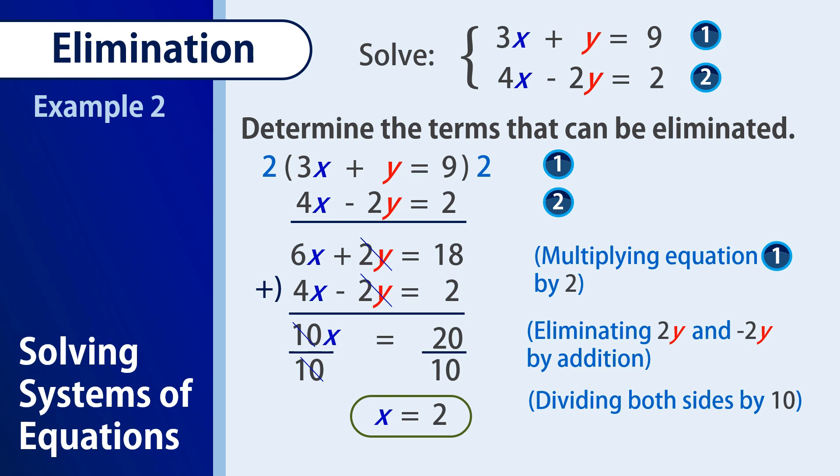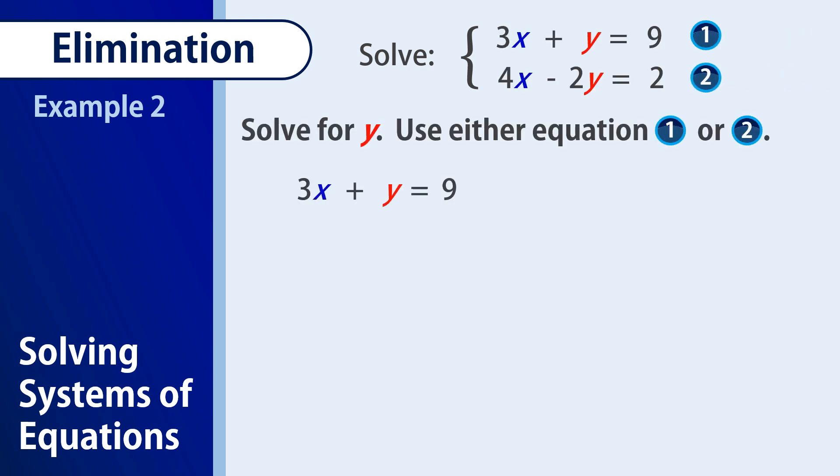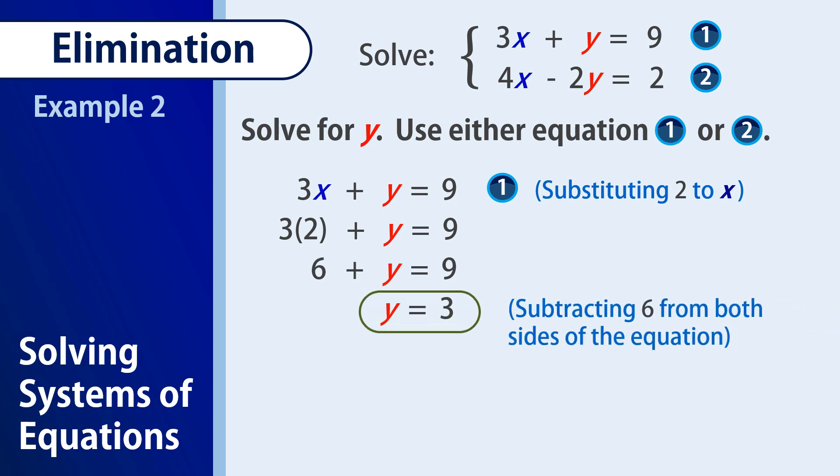Now, from our obtained value of x, we could now substitute that to any of the 2 equations. In this case, I will be using the first equation, 3x plus y equals 9. Our x value is 2, so we have 3 times 2 plus y equals 9, and 6 plus y equals 9. Subtracting 6 from both sides of the equation, we have y is equal to 3. Therefore, our solution set is the ordered pair 2, 3.